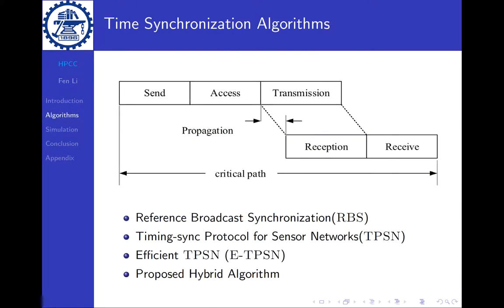So the figure shows six major components of the latency. It is coming from send, access, transmission, propagation, reception, and receive parts. These six parts make up the critical path where the latency comes from.